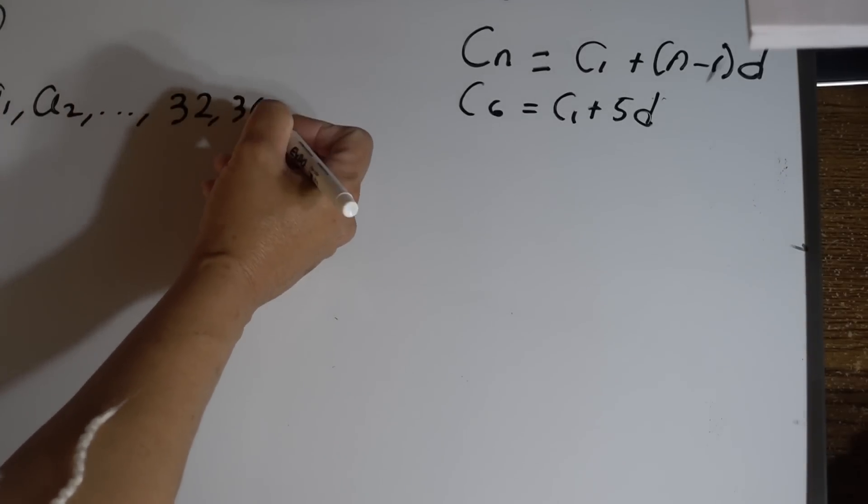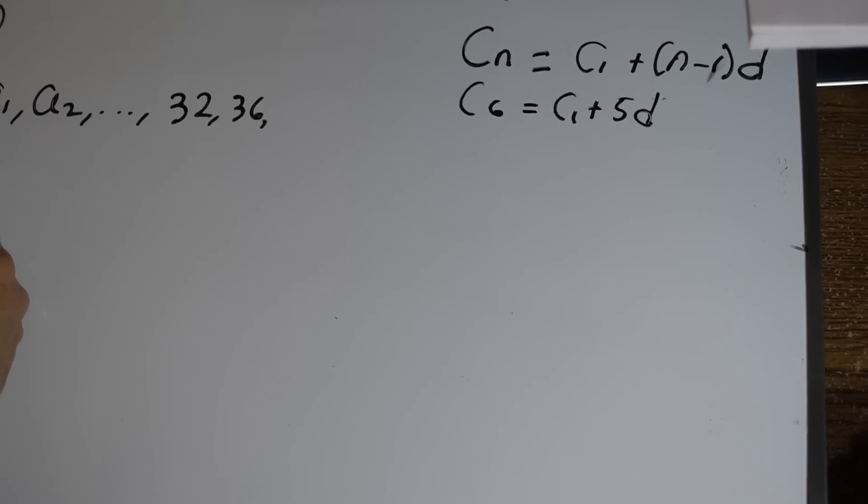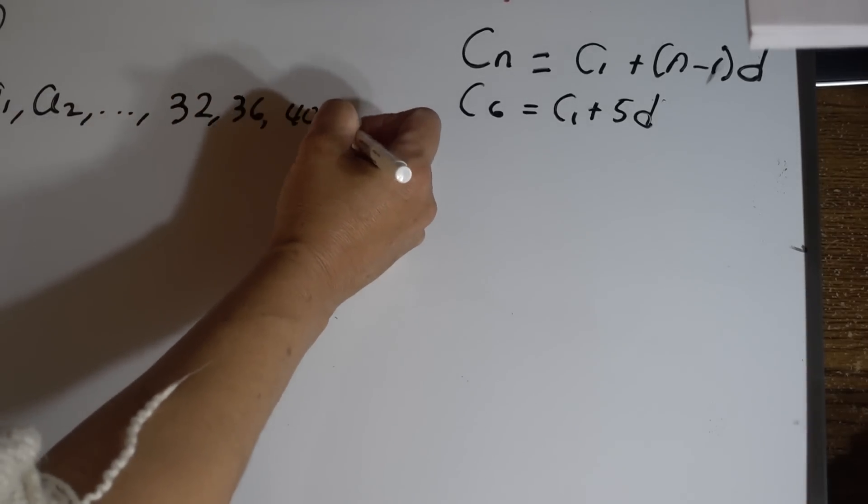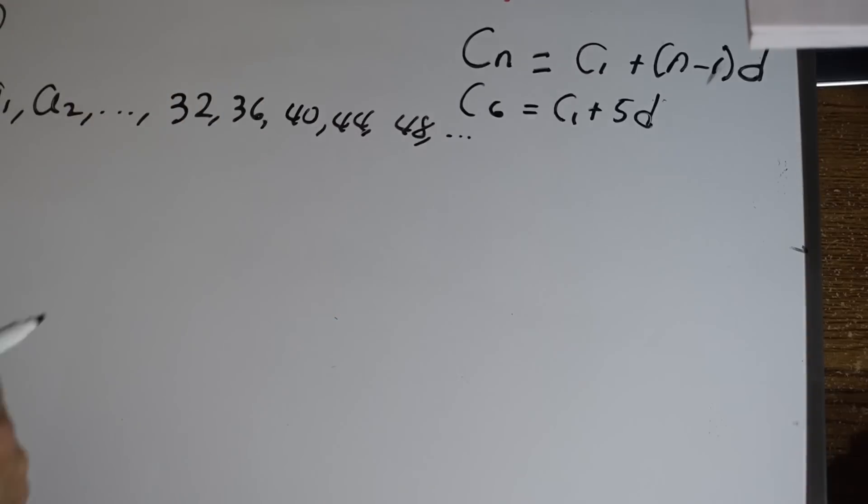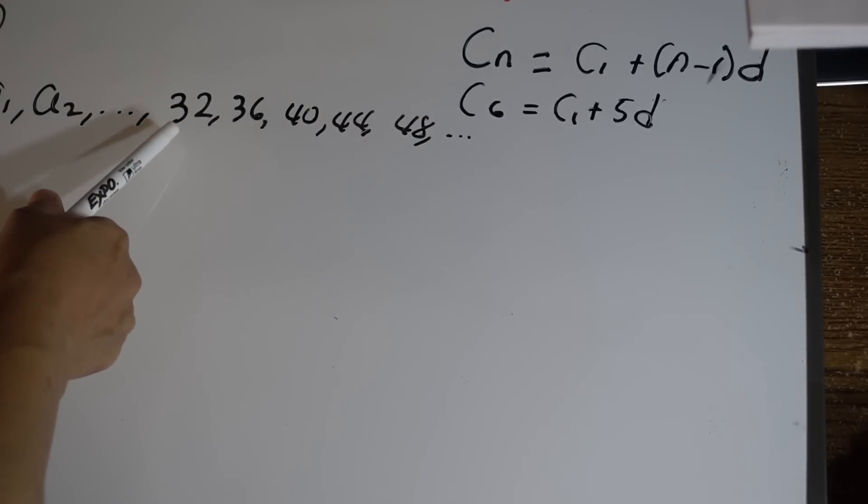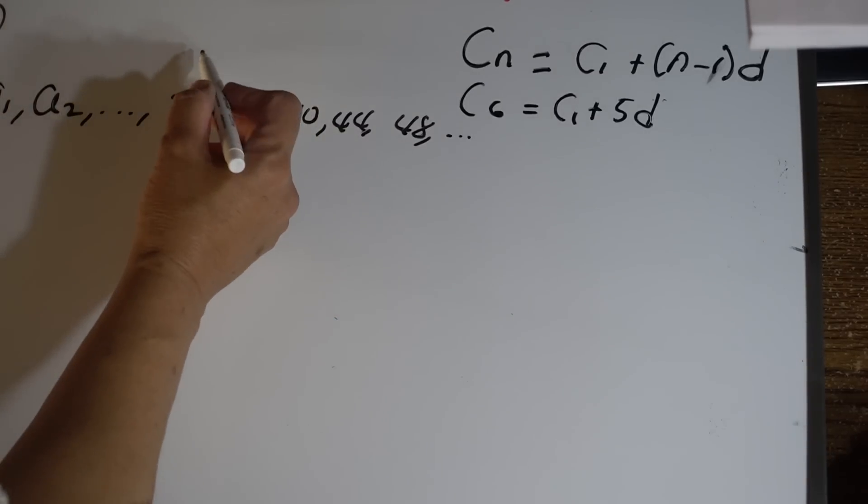32, 36, 40, 44, and 48 and it continues. We have these values and we know this one is a_6.